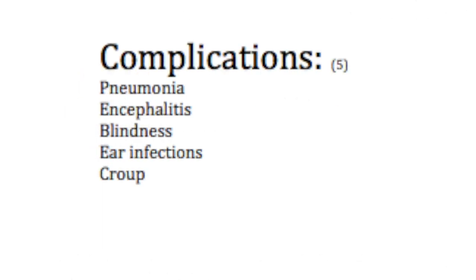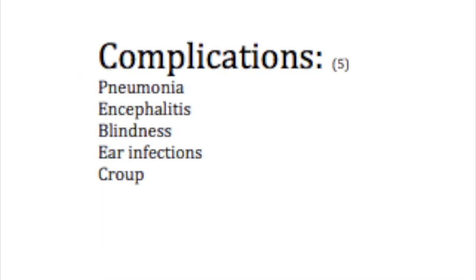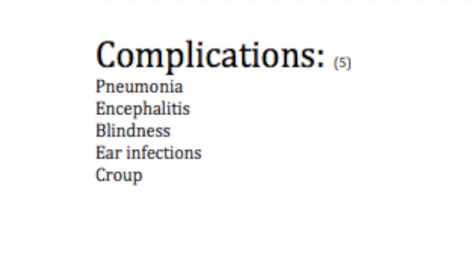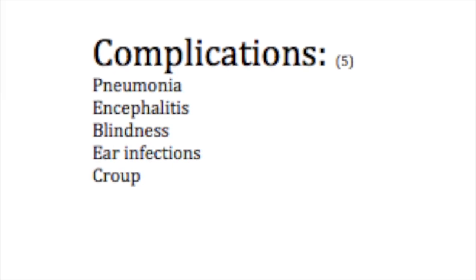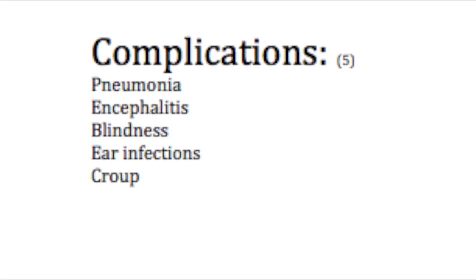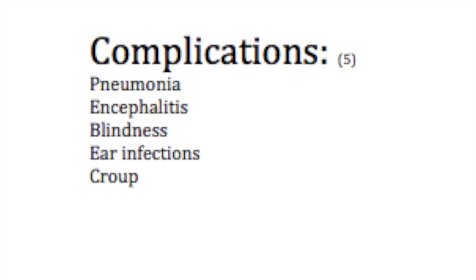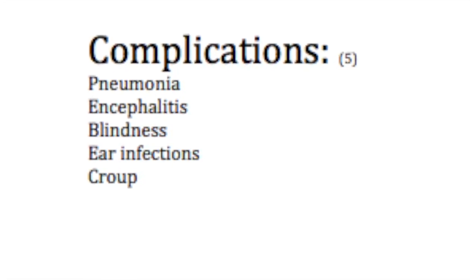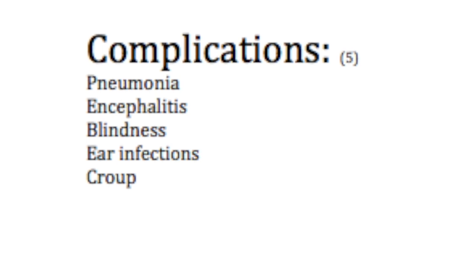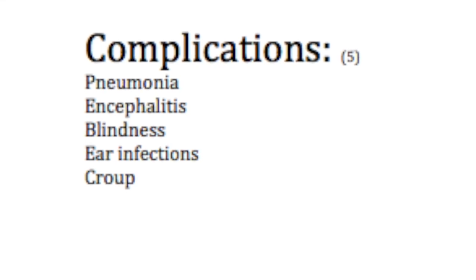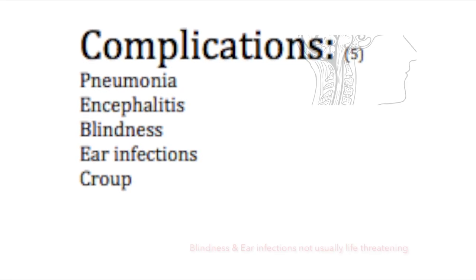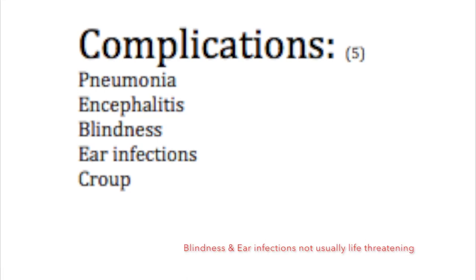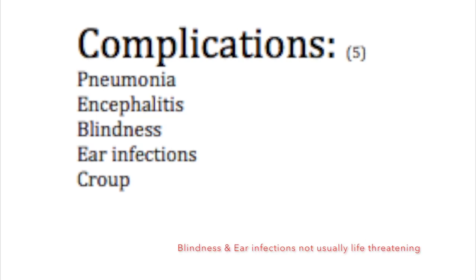The final thing to discuss is complications from measles. Even though we don't see measles very often, there are still outbreaks, and some complications can be life-threatening. These include pneumonia, encephalitis, blindness, ear infection, and croup.